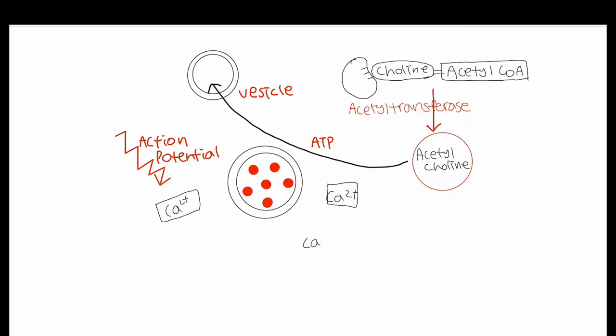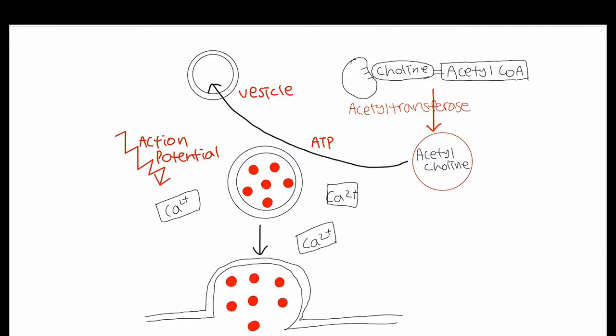The action potential that reaches the presynaptic terminal causes the opening of voltage-gated calcium channels. Calcium ions then diffuse down their electrochemical concentration gradient into the terminal from the surrounding areas. This influx of calcium ions triggers vesicles to fuse to the surface membrane of the presynaptic terminal in a process known as exocytosis.